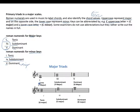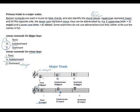Looking at major triads: C, E, G gives us the tonic, meaning this is the key of C major. The subdominant is built on F, the 4th degree — F, A, and C. The dominant is built on G, B, D giving us G major. The second key has one accidental which is F sharp, therefore we are in the key of G. G, B, D gives us the tonic. The subdominant is C, E, G — C major triad. The dominant is D.